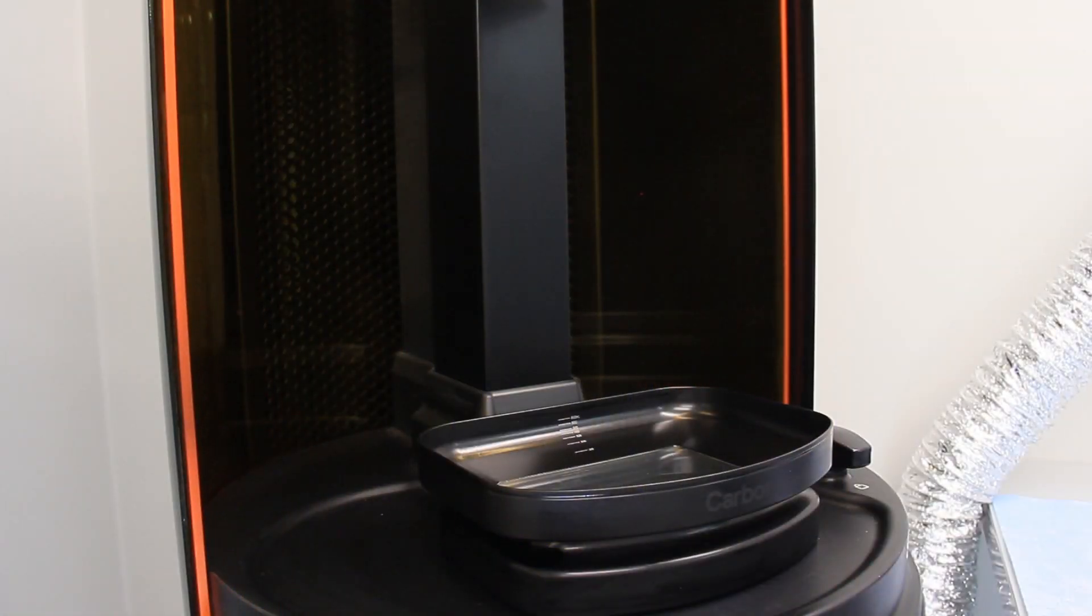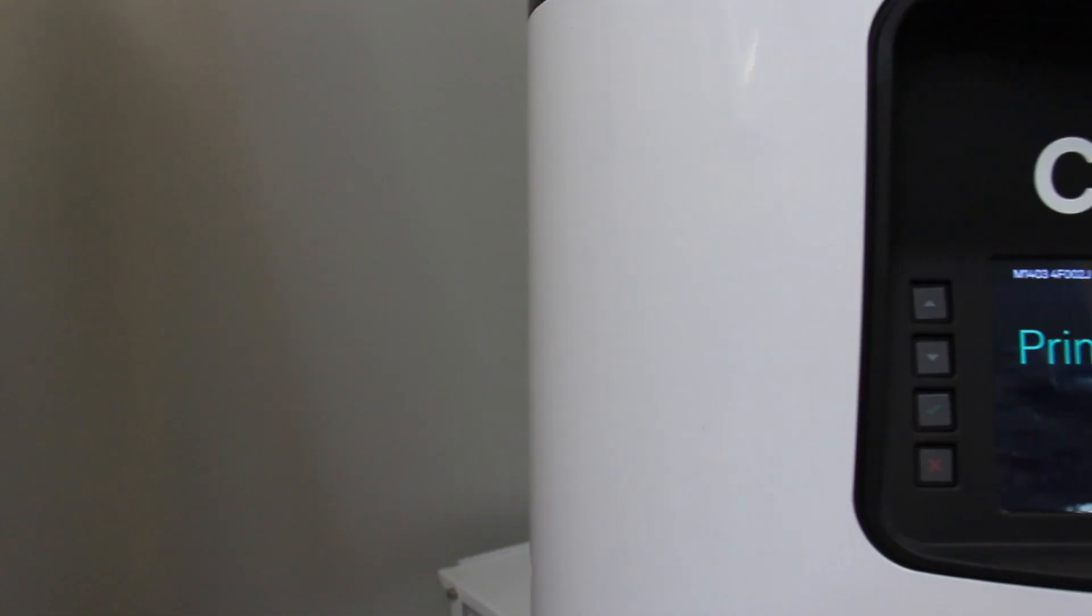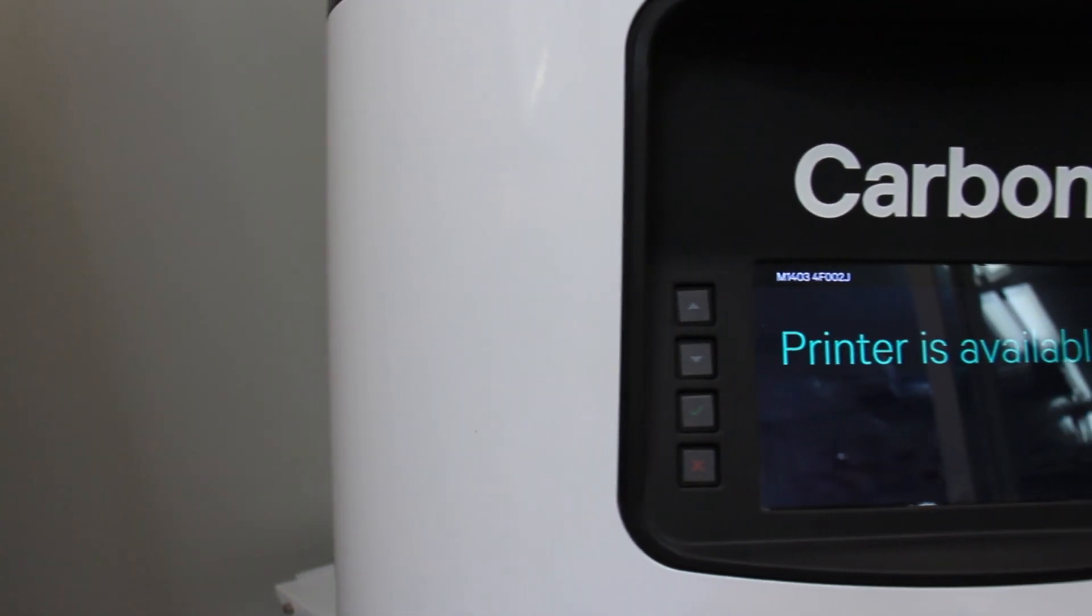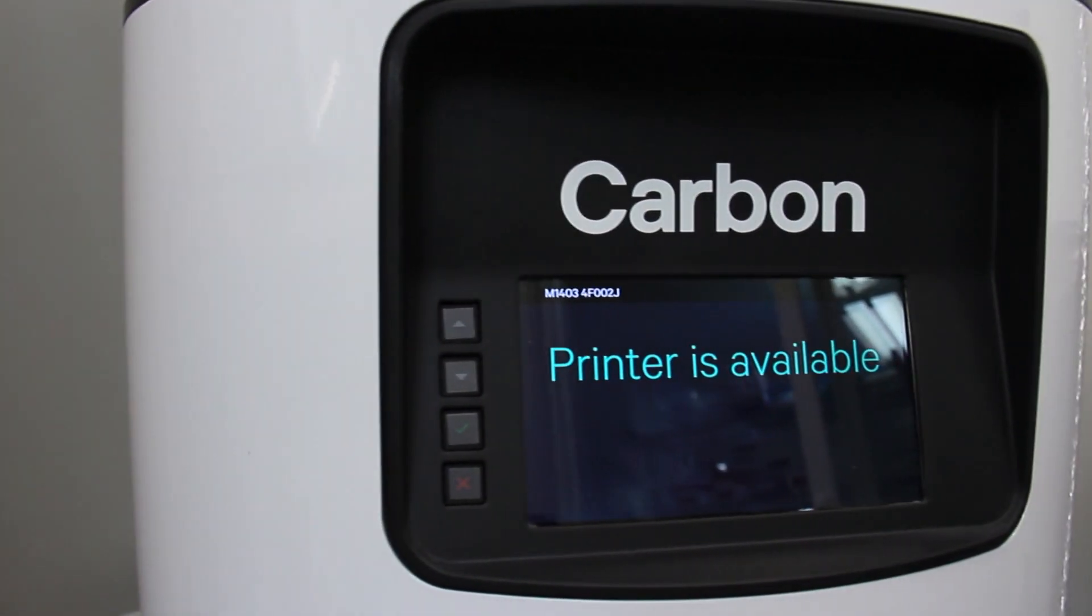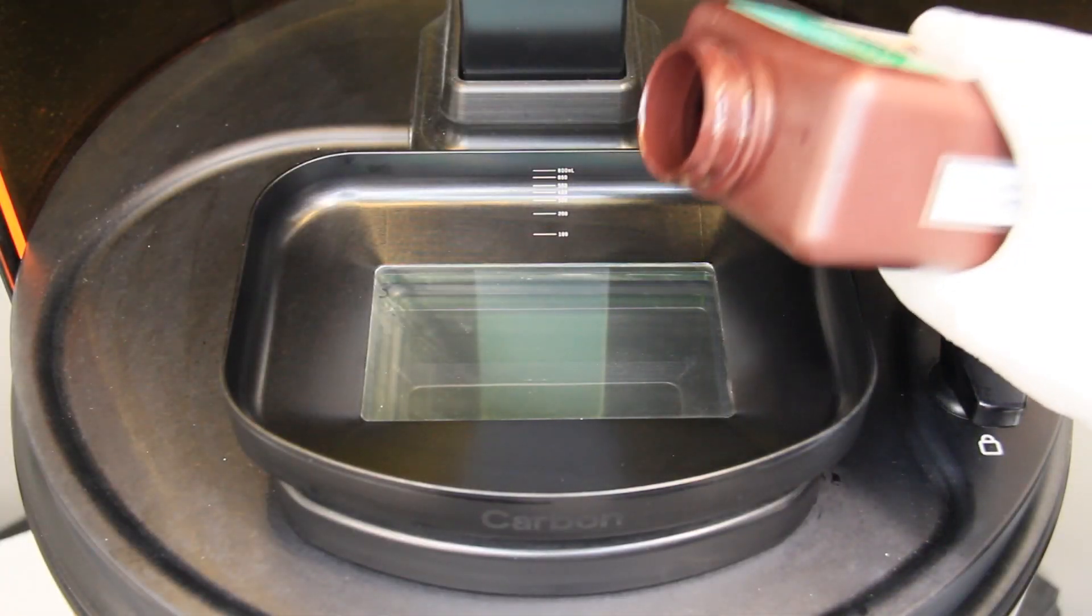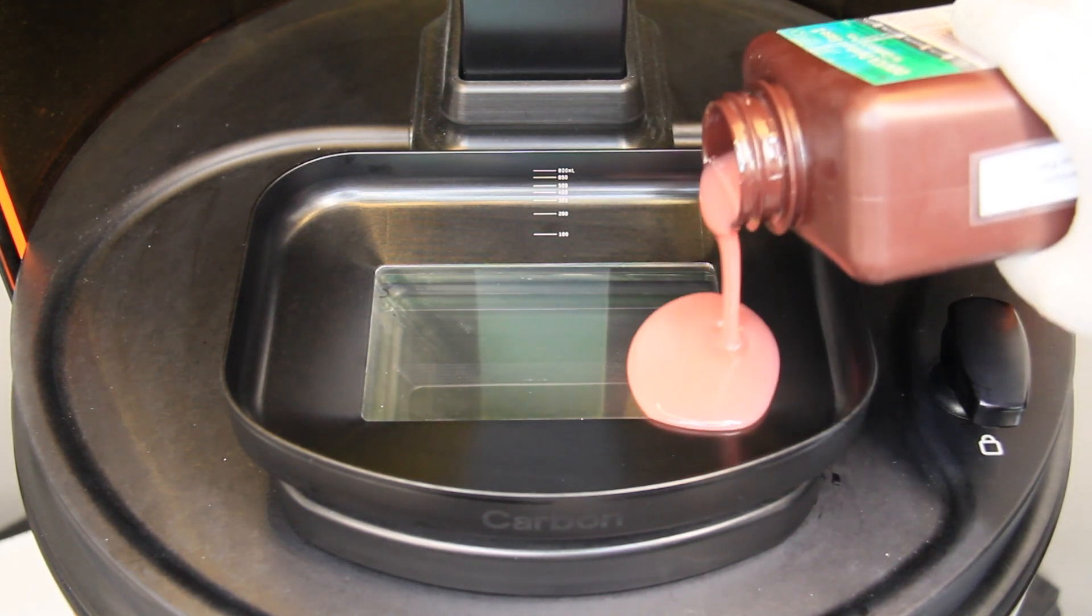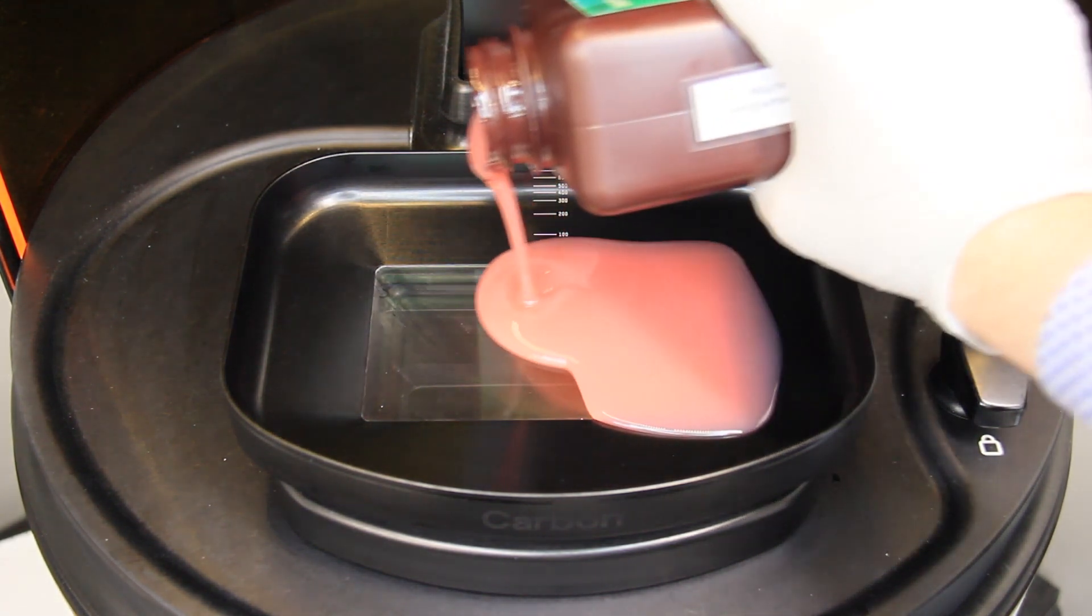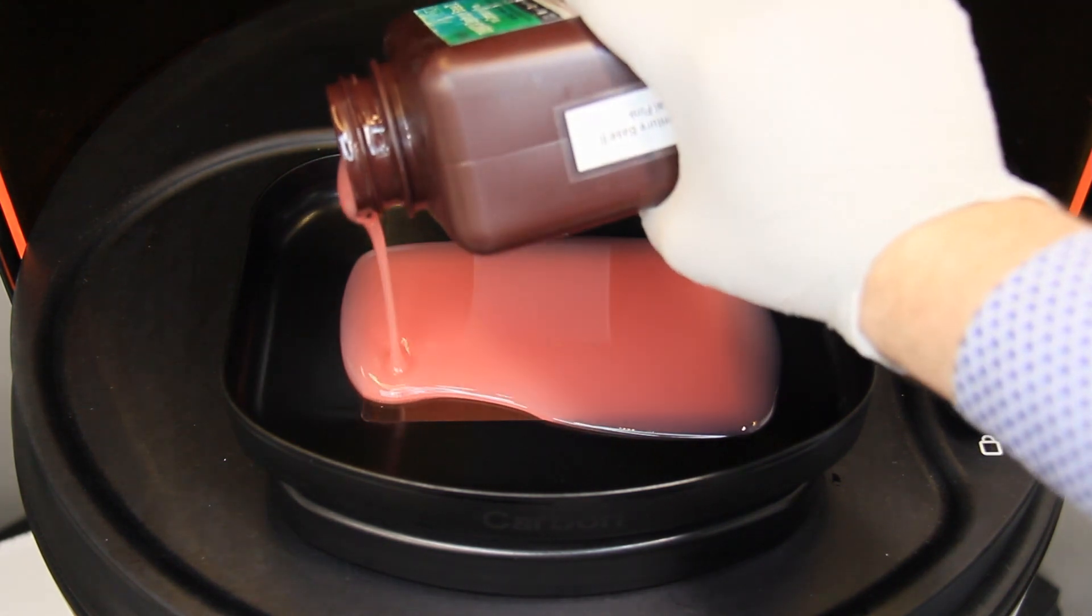The dentures are printed on a high-tech carbon 3D printer. The carbon printer uses a very precise ultraviolet projector to cure the resin exactly where desired. This is one of the only 3D printers that can reproduce the level of fine detail maintained throughout the process.